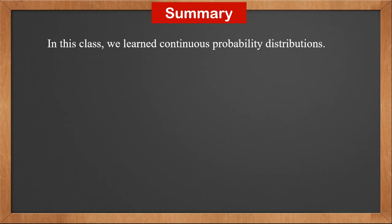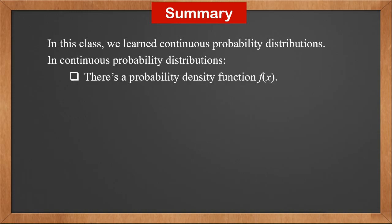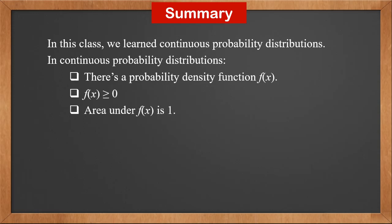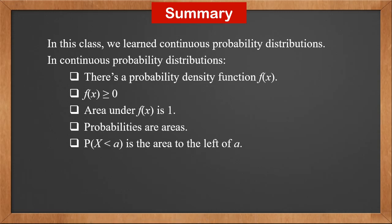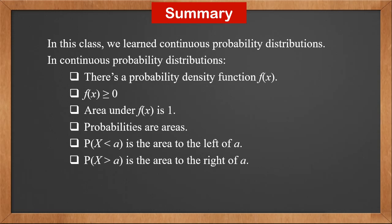In this class, we learn continuous probability distributions. In continuous probability distributions, there's a probability density function f of x. It is never negative. The area under the probability density function is 1. Probabilities are areas. P(x less than a) is the area to the left of a. P(x greater than a) is the area to the right of a. P(x equals a) is 0.